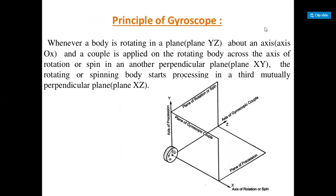Whenever a body is rotating in a plane about an axis and a couple is applied on the rotating body across the axis of rotation or spin in another perpendicular plane, the rotating or spinning body starts precessing in a third mutually perpendicular plane.